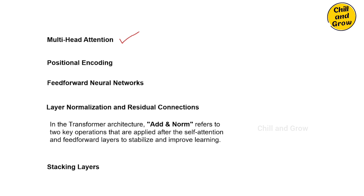The fourth concept is positional encoding. Transformers process all words at the same time, but that means the order of words can get lost. In language, the order of words is very important — a jumbled order changes meaning. So transformers use positional encoding: we add positional information to each word embedding to tell the model where each word appears in the sentence. This is positional encoding.